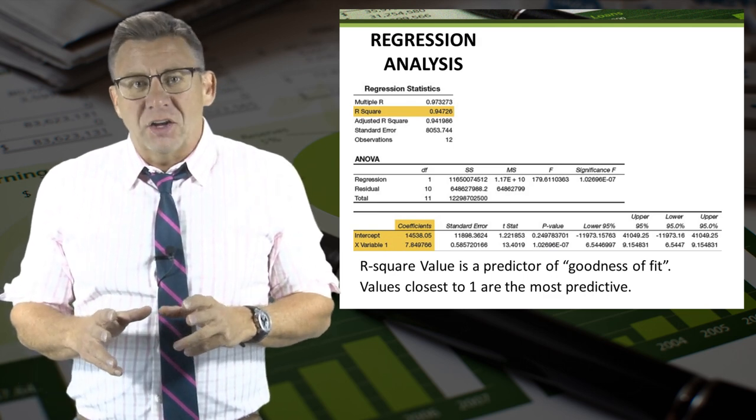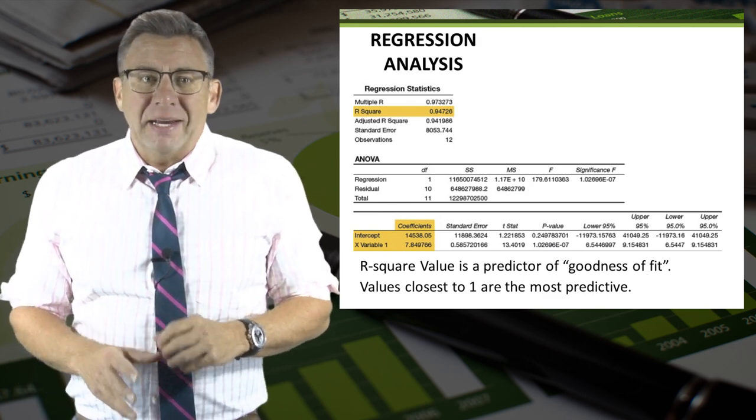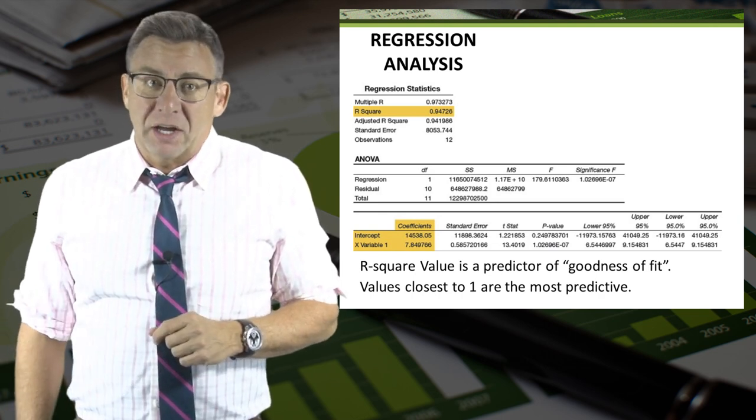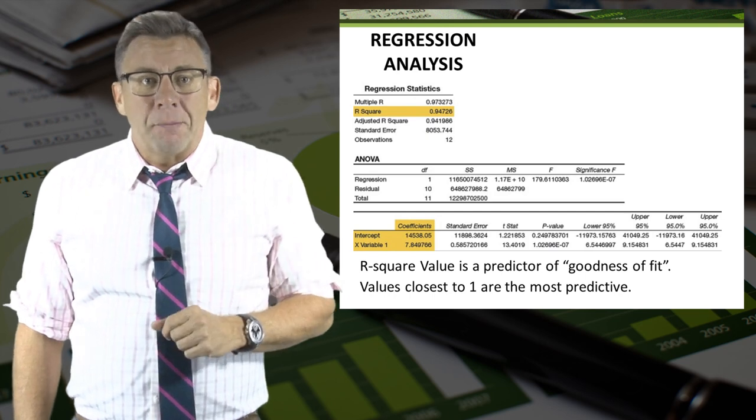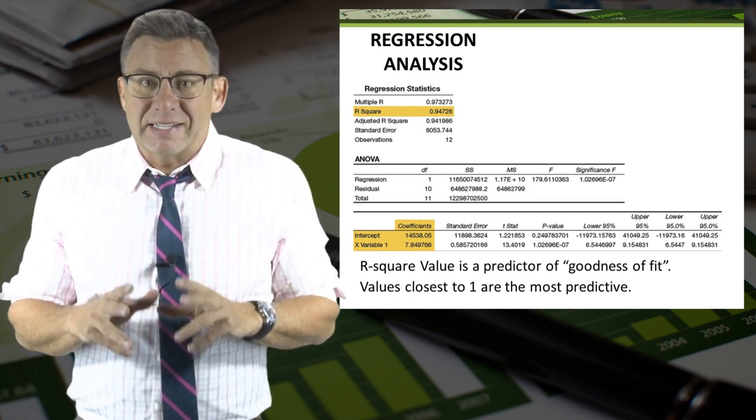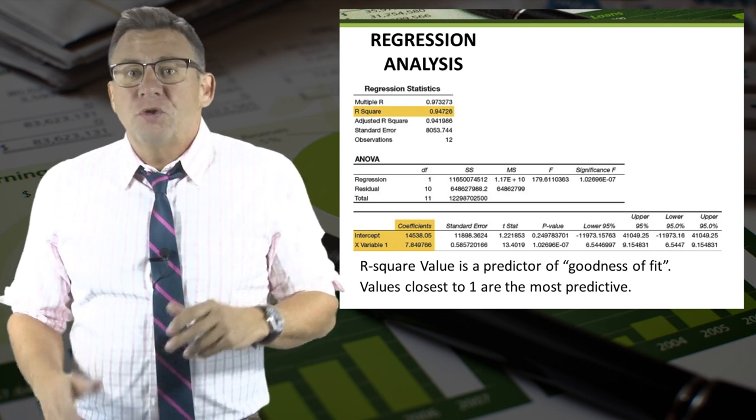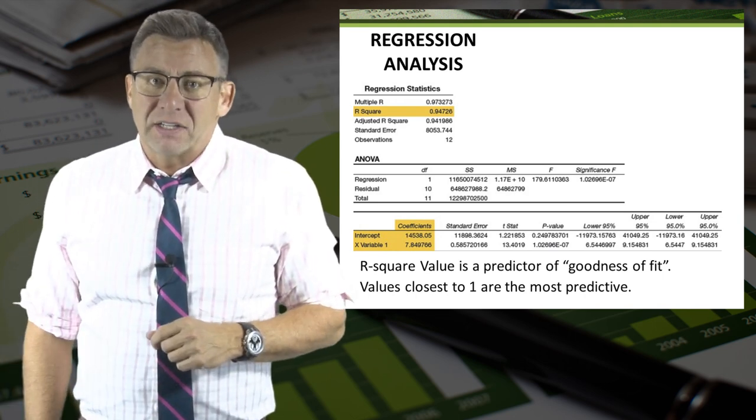R-squared values close to 0 means the cost equation does a poor job at helping us predict costs. R-squared is an important number and makes regression analysis significantly better at predicting costs than the high-low method, which provides no such confidence factor.